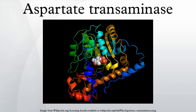Aspartate transaminase, or aspartate aminotransferase, also known as aspartate or serum glutamic oxaloacetic transaminase, is a pyridoxal phosphate-dependent transaminase enzyme. AST catalyzes the reversible transfer of an amino group between aspartate and glutamate and, as such, is an important enzyme in amino acid metabolism.